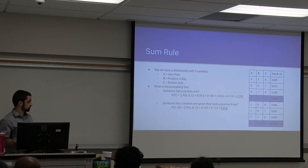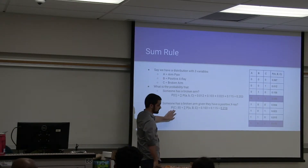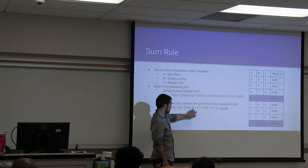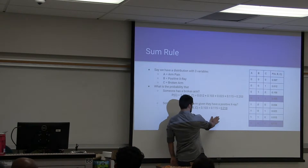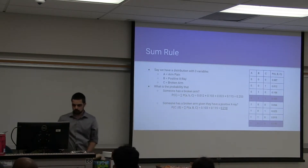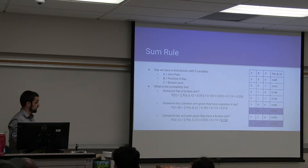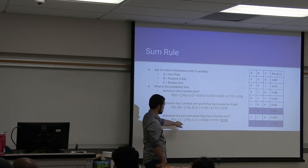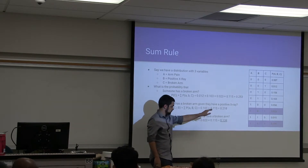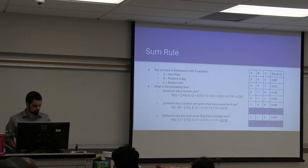What is the probability that someone has a broken arm given that they have a positive x-ray? This simplifies to P of C given B. Wherever B and C are both true on the table, we take those values, sum them, and get a probability of 0.218. And then, what is the probability that someone has arm pain given that they have a broken arm? That's P of A given C — take the sum where both A and C are true, giving us a probability value of 0.138.